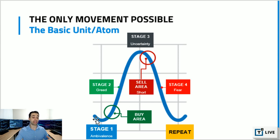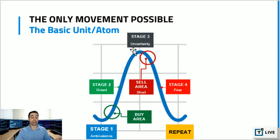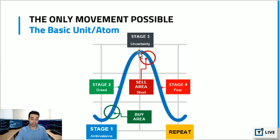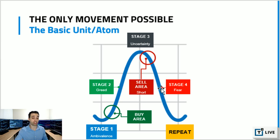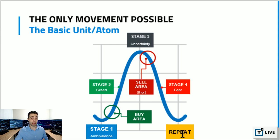If it breaks out, you get a stage two uptrend which is dominated by greed. Everybody starts thinking this is going to be the next Apple, the next Tesla, and they buy, buy, buy. Eventually the stock runs out of demand and enters stage three, which is uncertainty — the topping stage. As the stock breaks down, you get stage four, which is dominated by fear. As fear turns into panic, the stock accelerates into a climactic sell-off and the cycle repeats.